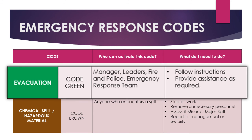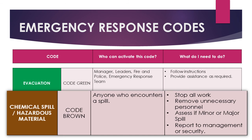Code Green: Evacuation. Who can activate this code? Manager, leaders, fire and police, and the emergency response team. What do I need to do? Follow instructions and provide assistance as required. Code Brown: Chemical spill or hazardous material. Who can activate this code? Anyone who encounters a spill. What do I need to do? Stop all work. Remove unnecessary personnel. Assess if it is a minor or major spill. Report to management or security.